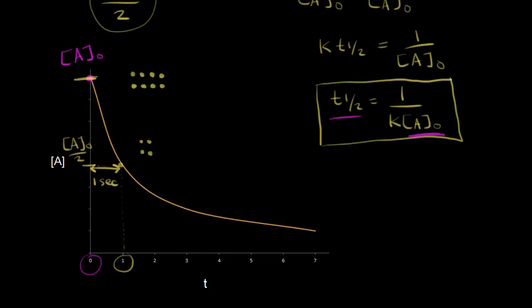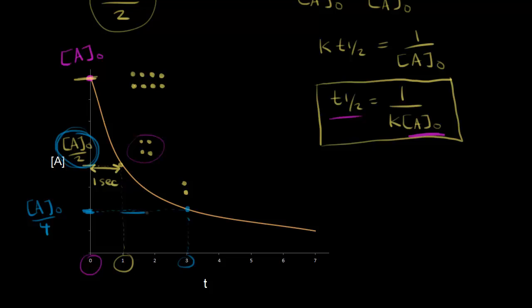How long does it take for the second half-life — going from four molecules to two molecules? If four molecules is our starting concentration now, half of that would be the initial concentration divided by four. Finding that point on the graph and dropping down, we can see we're at time equals three seconds. So the second half-life is two seconds — it's twice the first half-life.